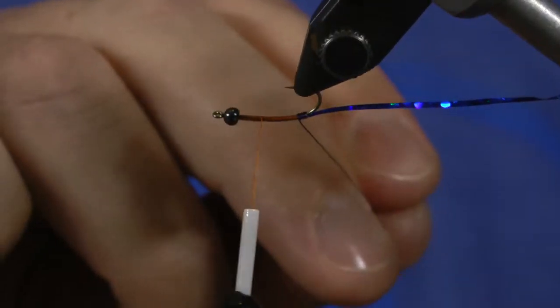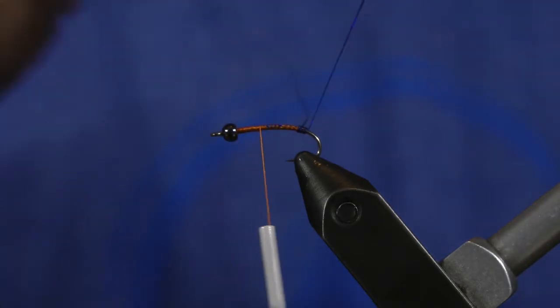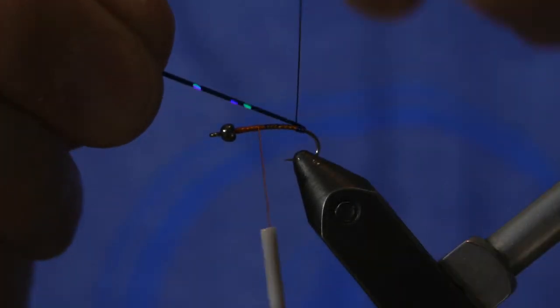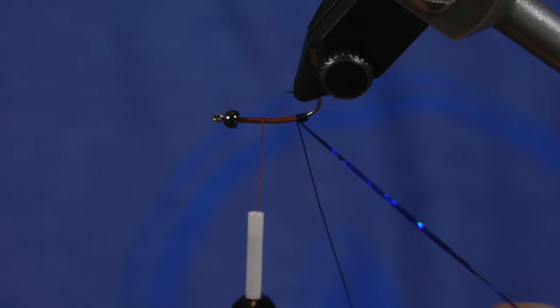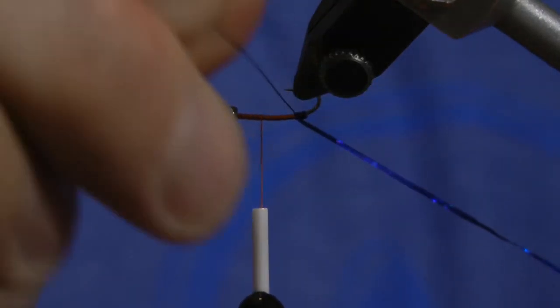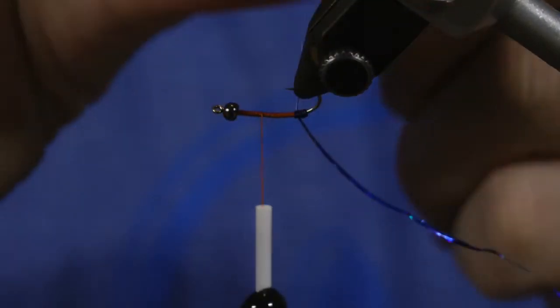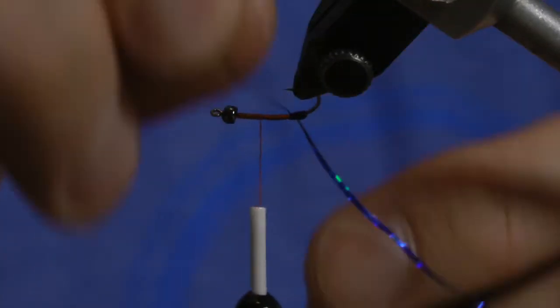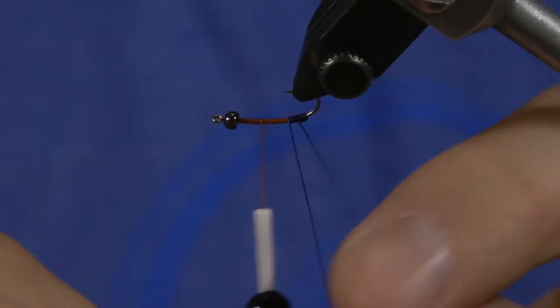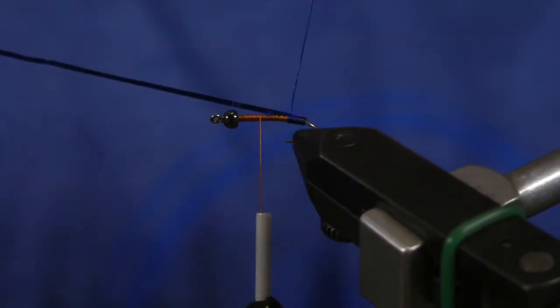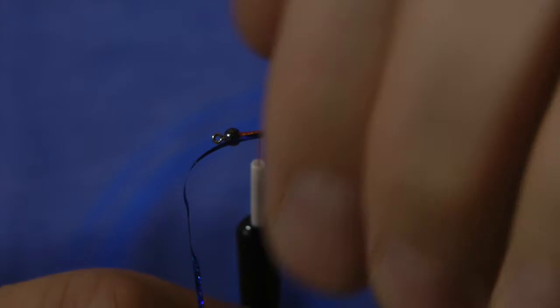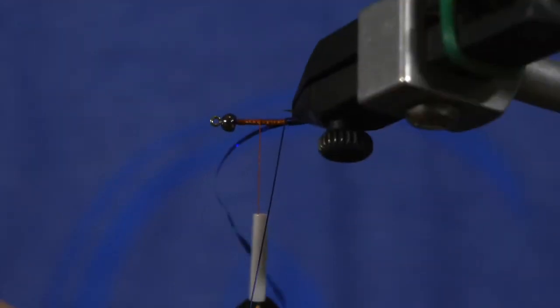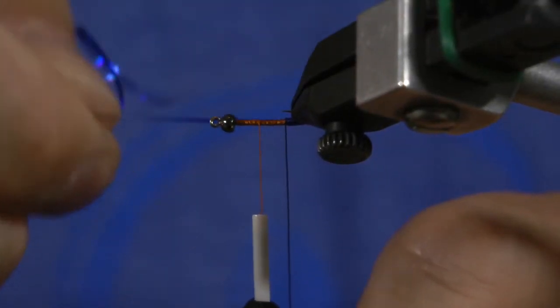Once I hit the fifth wrap, I actually use the wire to lock down the tinsel. So on the sixth wrap, I lock down that hollow tinsel and then I start over again. One, two, three, four, five, and then on that sixth wrap I lock down the hollow tinsel. That'll go all the way up to about two-thirds up that bug.